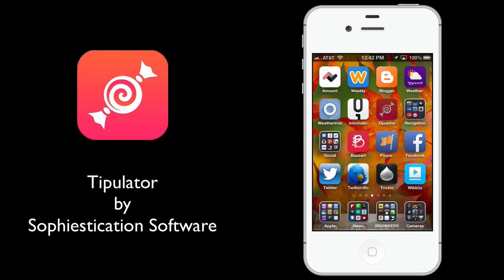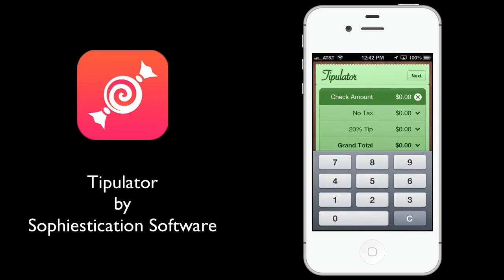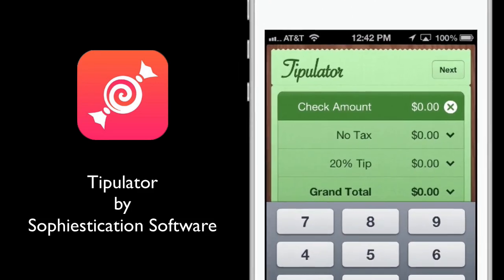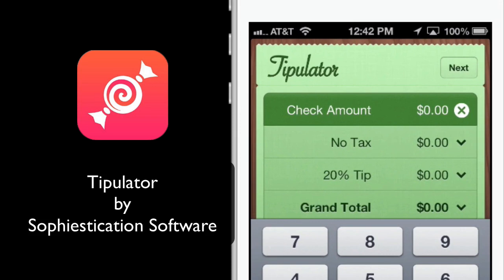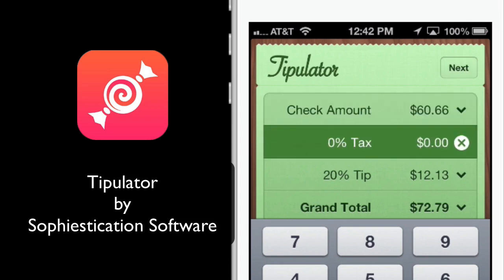Let me go ahead and pull Tipulator up. I thought this would be a good time to review the app because it just came out with a new icon — I almost didn't even recognize it. So you see here, I'm beginning with the check amount, and I'm going to go ahead and type in $60.60. I'm going to click Next.